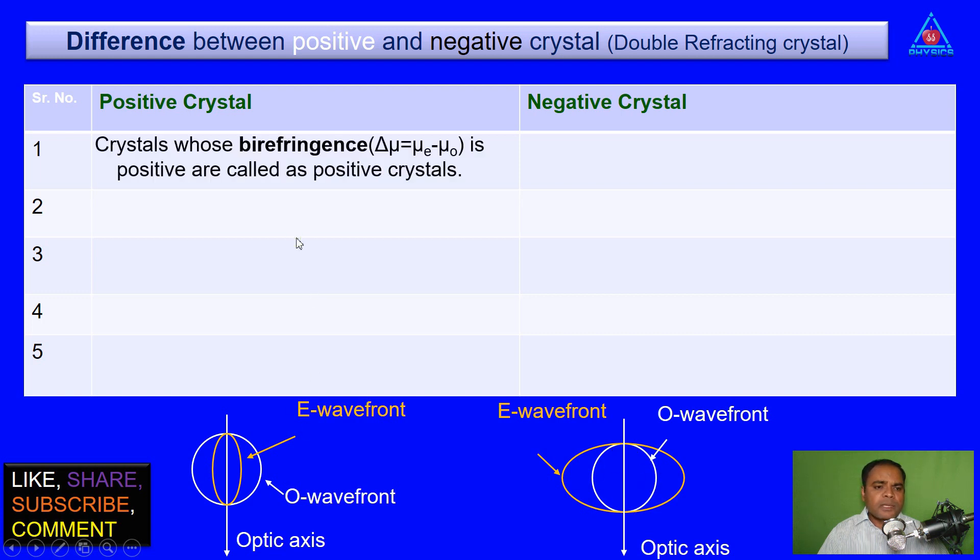First point, crystals whose birefringence, that is Δμ = μE - μO, is negative are called as negative crystals.